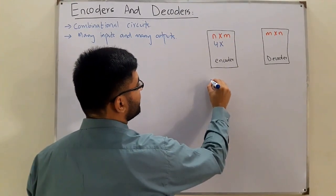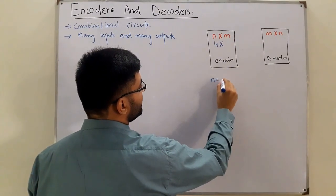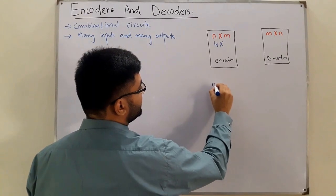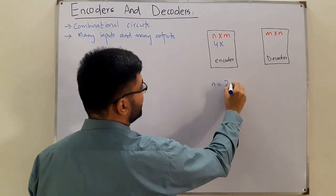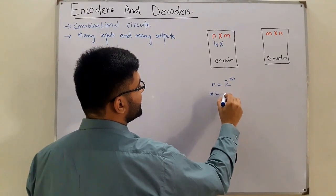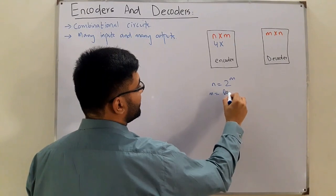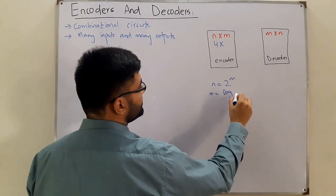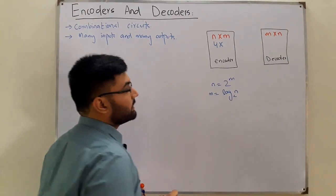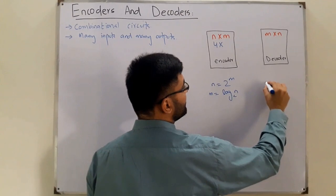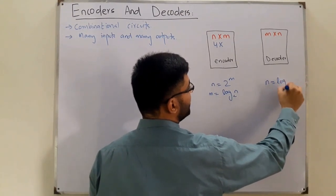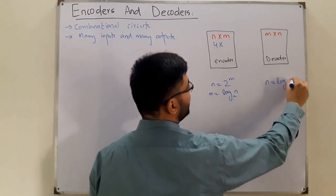The formula relating them is: n = 2^m, which means m = log₂(n). So given n input lines, you can find the required number of output lines m using this formula. Similarly for the decoder side.